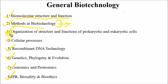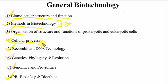For the organization of structure and function of prokaryotic and eukaryotic cells, you need to know cell wall and cell membrane composition. You should also read about the cellular cycle, cell division, and cancer.